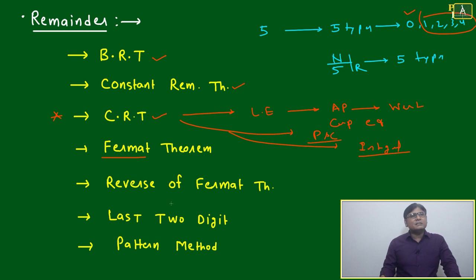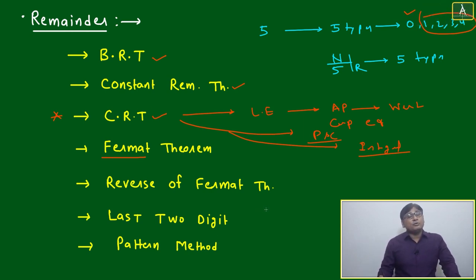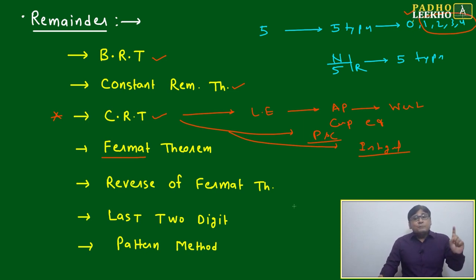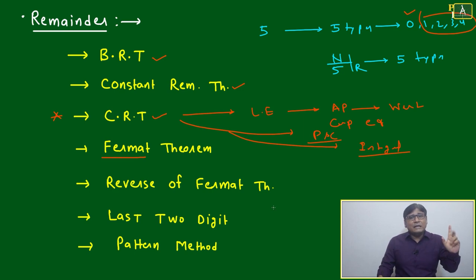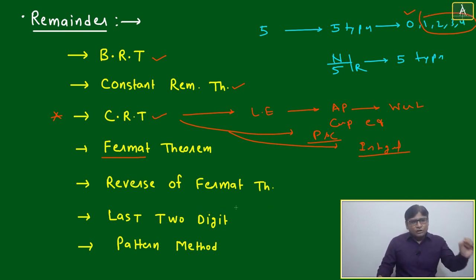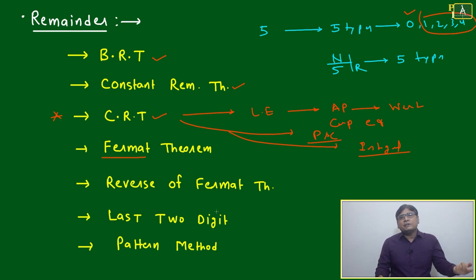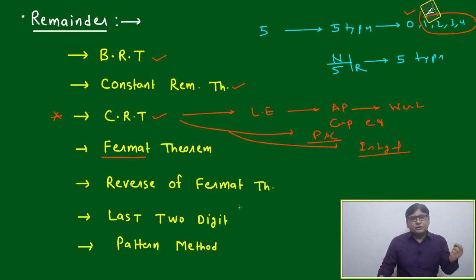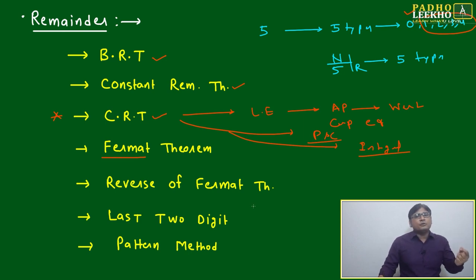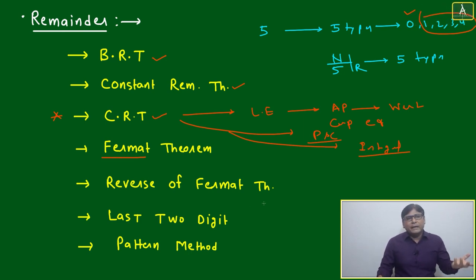Next is Fermat's theorem and the reverse of Fermat's theorem, last two digits, last three digits, then binomial theorem, multinomial theorem, and pattern method. These are six or seven methods that will be useful for remainder. Which method, theorem, or technique to apply depends totally on the representation of the question — all theorems cannot be applied for the same question, and the same theorem cannot be applied for different types of questions.